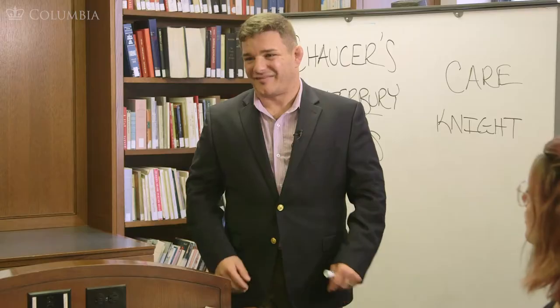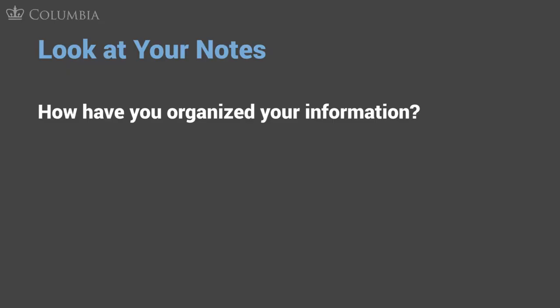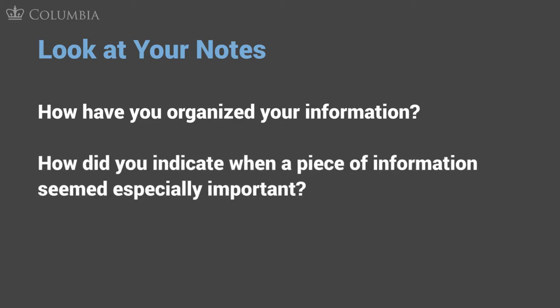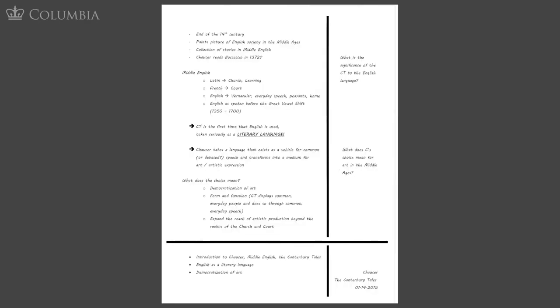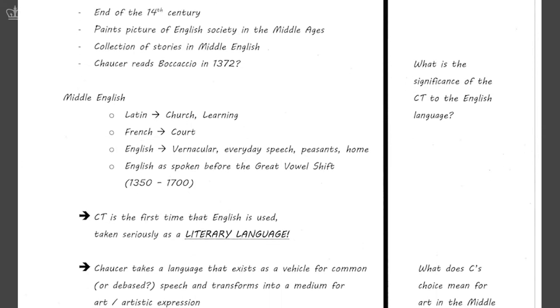Really, really cool stuff. Okay, take a look at the notes that you just took. I want you to ask yourself three questions about those notes. First, how did you organize your information? Second, how did you know what information was more important than other information? And finally, did you write everything down — and if not, why not? The notes that you see here are notes that were taken about the lecture I just gave, in accordance with something called the Cornell note-taking method.